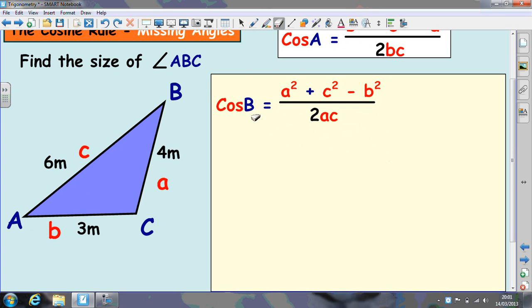After you've done that, you just fill in the values. So, cos of B equals A squared. Now, if you look at your diagram, A is 4 plus C squared, that's 6 squared, take away 3 squared, which is down there. And you have to divide that by 2 times 4, and if we look at the diagram again, C is 6.